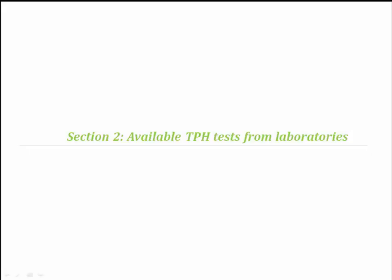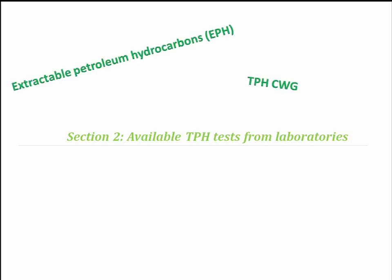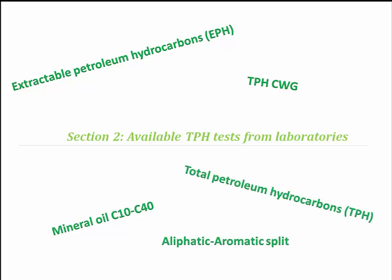Section 2: Available TPH tests from the laboratories. There are various types of tests obtainable from laboratories relating to hydrocarbons. In this section we will try to explain the difference between the most common types we see and why they are obtained. Please note that the labs all use different but similar names for the same thing, so it is up to you to check with your favourite lab as to the methodology behind their tests.